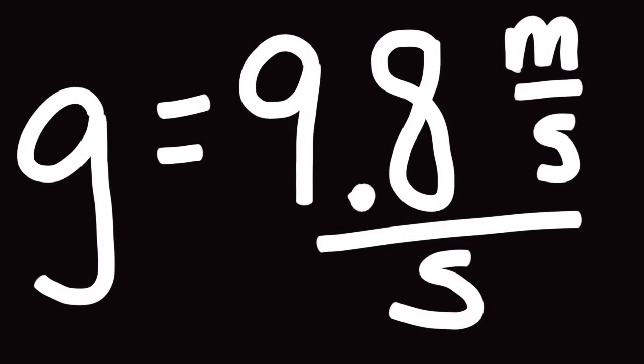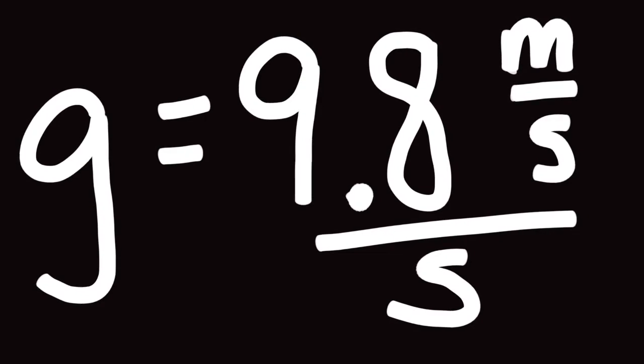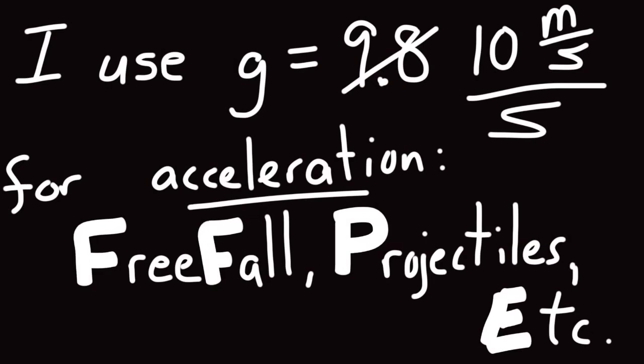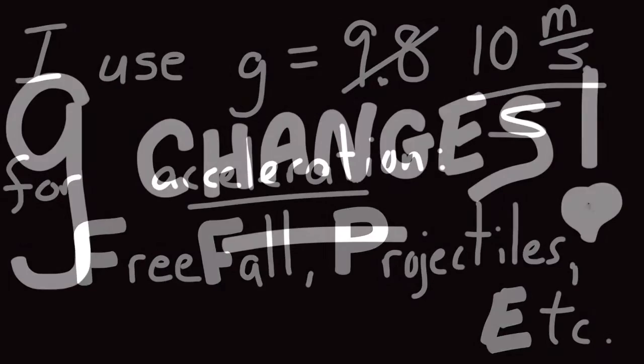And, little g is the acceleration of gravity with a value of 9.8 meters per second every second here. And, again, in class, when dealing with acceleration, free fall, projectiles, things like that, I will use meters per second every second. And, again, round that 9.8 number off to 10.